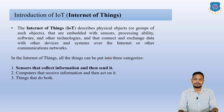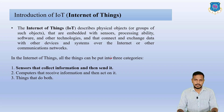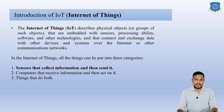Internet of Things describes physical objects or groups of such objects that are embedded with sensors, processing ability, software, and other technologies, and that connect and exchange data with other devices and systems over the internet or other communication networks. The types of sensors used in IoT include gas sensors, PIR sensors, IR sensors, proximity sensors, and flame sensors.